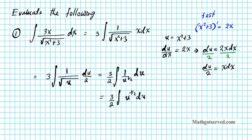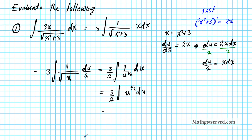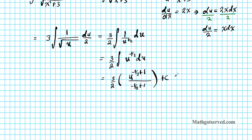Let's find the antiderivative using the power rule. We have 3 over 2 times the result of adding 1 to the exponent of negative 1/2 and dividing by the new exponent, plus c. Simplifying: 3/2 times u to the 1/2 over 1/2 plus c. Simplifying further, we get 3 times the square root of u plus c.